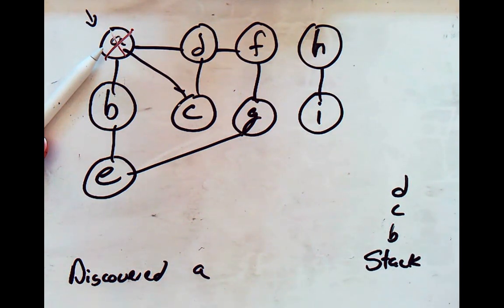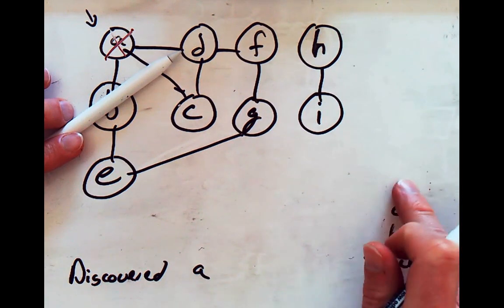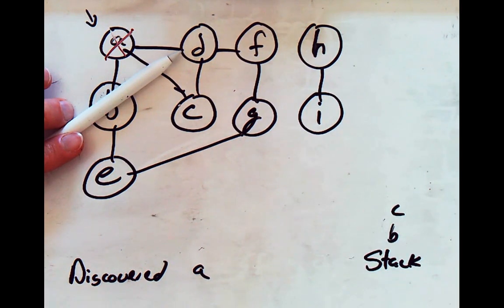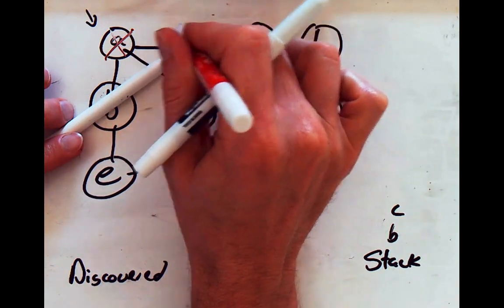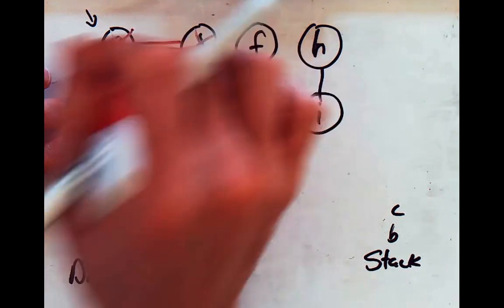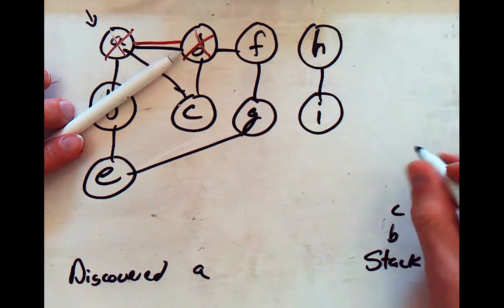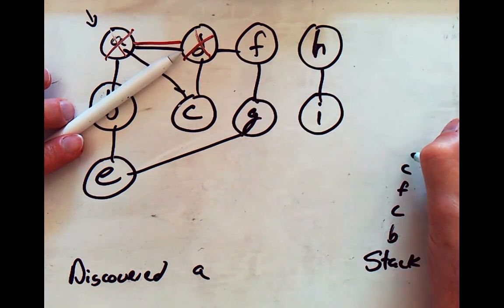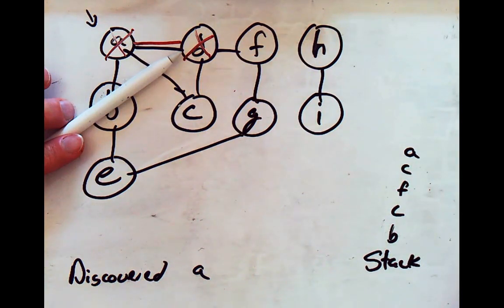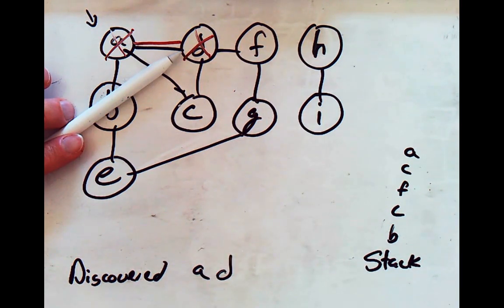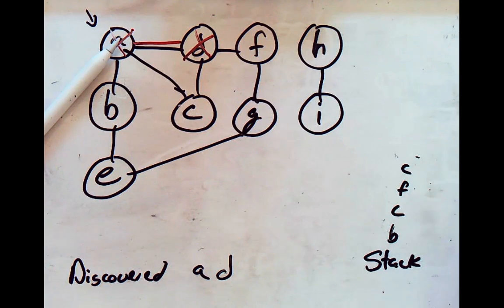We've processed one node, so now we repeat the process. D is on top, so it gets popped off. It's not discovered, so we mark it as discovered and highlight the path we're taking. We look at everything it's connected to — F, C, and A — and push all of those onto our stack. Next, we pop A; it's already discovered, so nothing to do. Then we pop C off the stack.